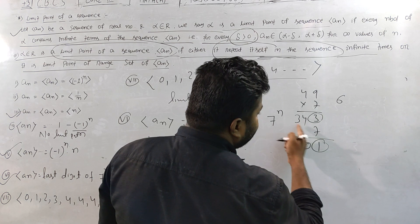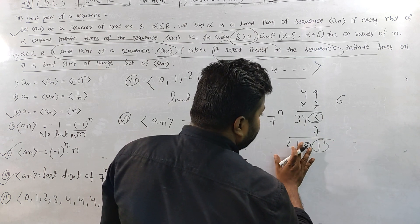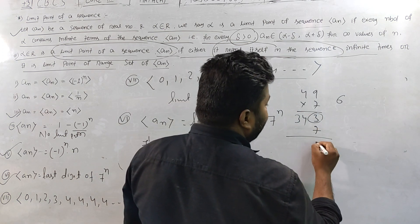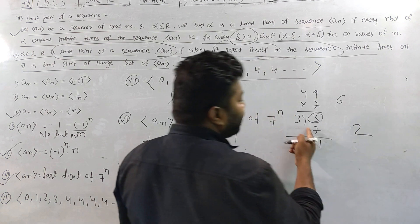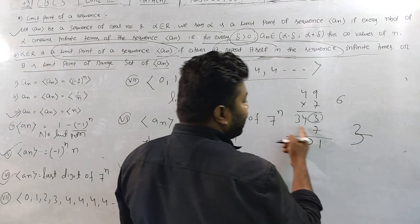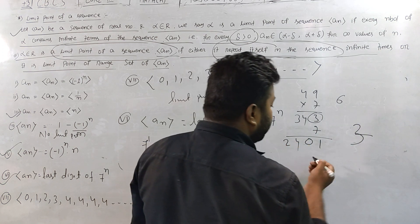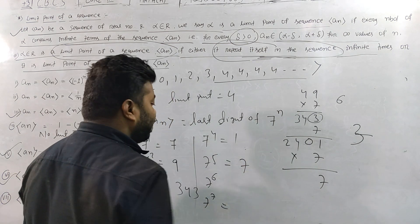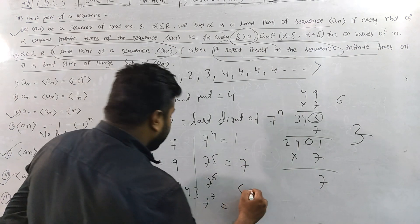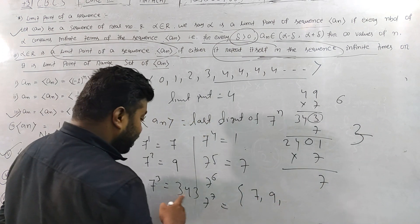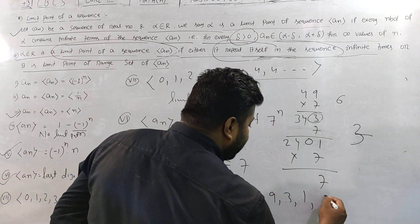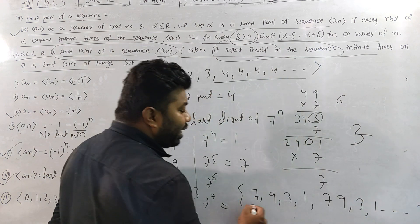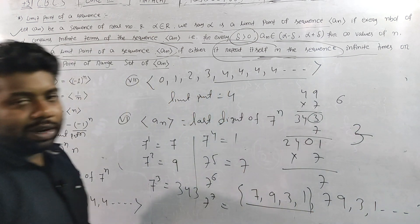The sequence of last digits of 7^n is 7, 9, 3, 1, repeating infinitely. So the limit points of this sequence are 7, 9, 3, and 1, since each repeats infinitely many times.